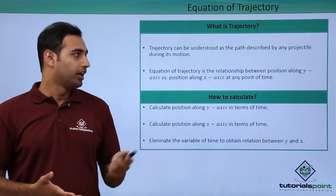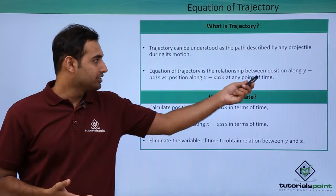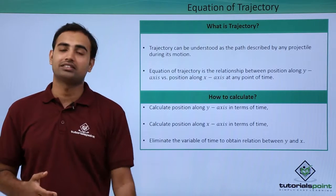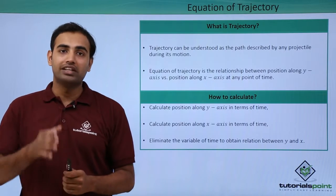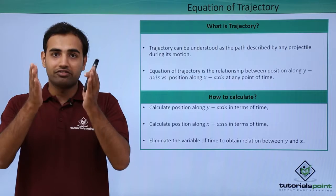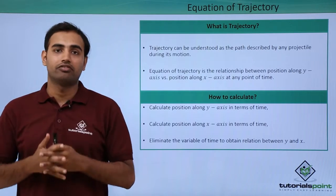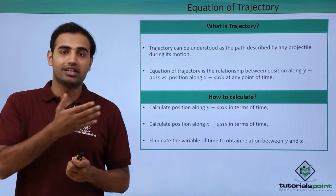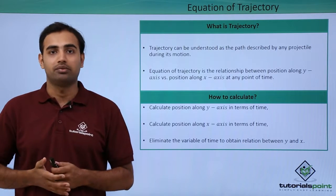Now what exactly is equation of trajectory? The equation of trajectory is the relationship between positions along y-axis with positions along x-axis at any point of time. So we create an equation in which we have y as a function of x. That function can essentially be plotted and by looking at the graph we can comment on the trajectory of the object. In this case it will be object undergoing projectile motion.